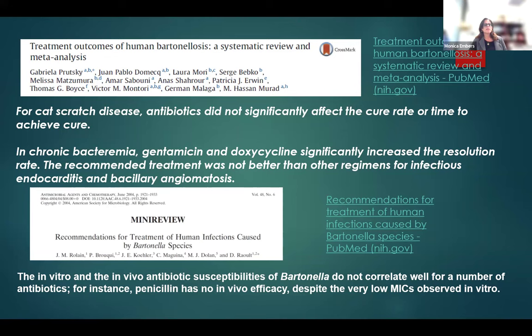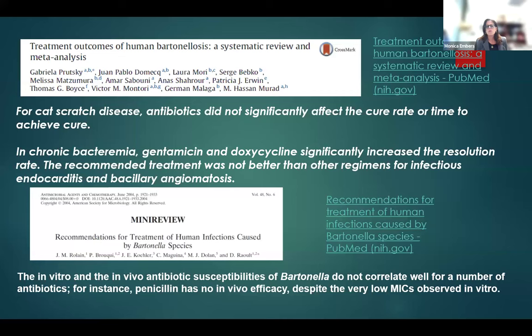Two reviews — a systematic review and meta-analysis, and a mini-review — offer further insight. The systematic review showed that for cat scratch disease, antibiotics did not significantly affect the cure rate or time to achieve cure. In chronic bacteremia, gentamicin and doxycycline did significantly increase the resolution rate, but the recommended treatment was not better than other regimens for infectious endocarditis and bacillary angiomatosis. The mini-review found that in vitro and in vivo antibiotic susceptibilities of Bartonella don't correlate well — for example, penicillin has no in vivo efficacy but showed very low MICs when tested in vitro.